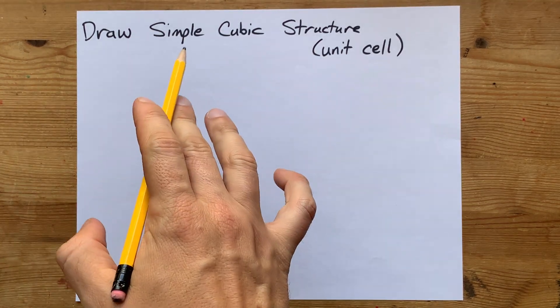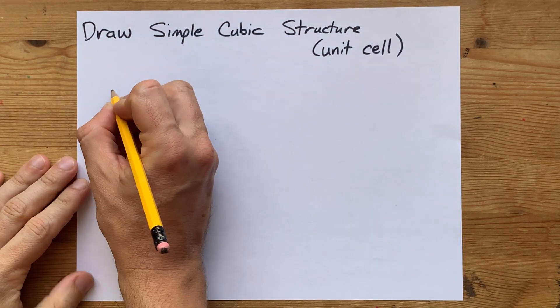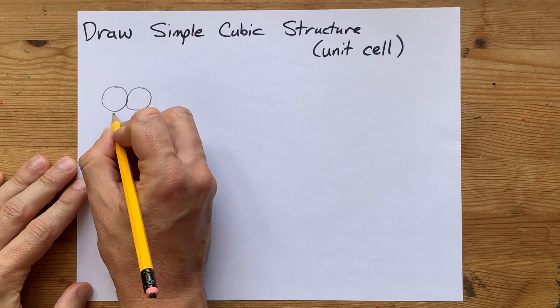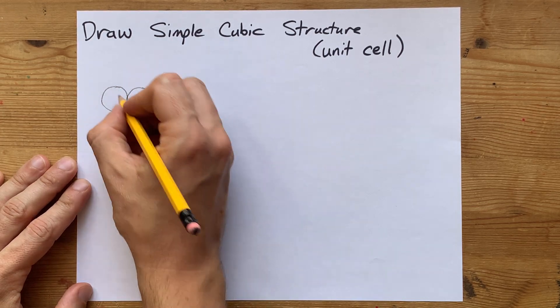I'm going to show you how I draw my simple cubic unit cell. Simple cubic is what you get when you stack balls side by side and up and down so that their diameters are lined up.